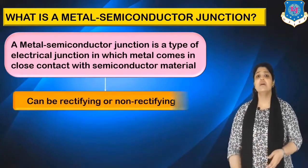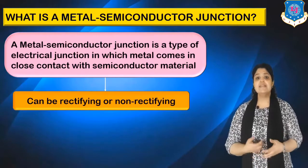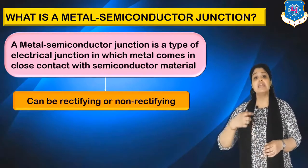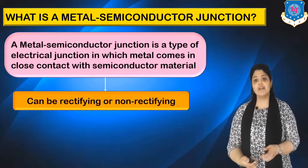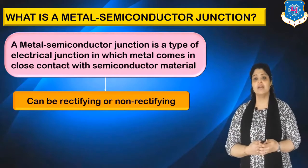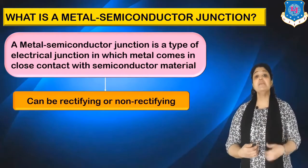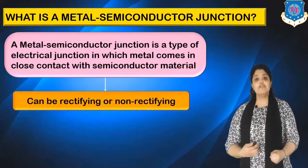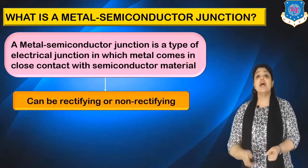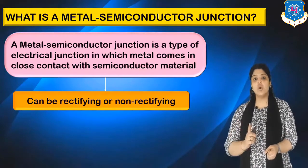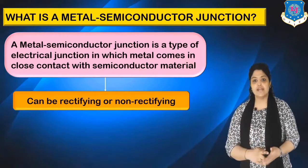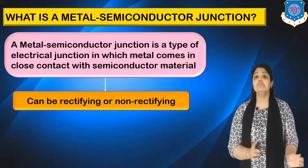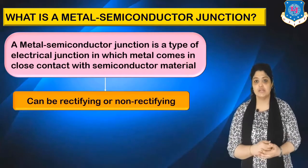Talking about metal semiconductor junctions, they can be either rectifying or non-rectifying. A rectifying junction is one which allows current flow only in one direction, whereas a non-rectifying junction allows current flow in both directions.